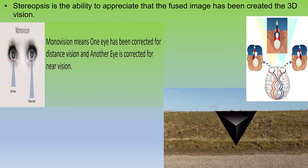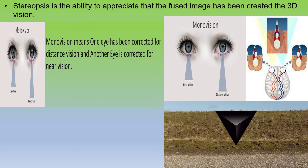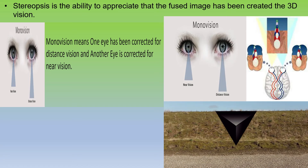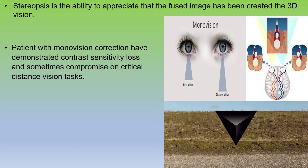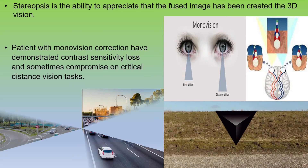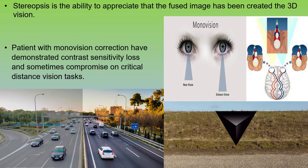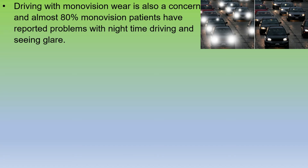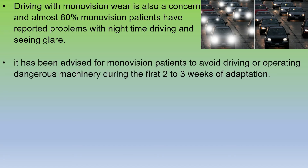But in monovision, both eye image sizes are different because both eye powers are different. That's why in monovision, stereopsis is decreased, which results in some monocular suppression of blur, and also occurs as the add power increases. Patients with monovision correction have demonstrated contrast sensitivity loss and sometimes compromise on critical distance vision tasks. Driving with monovision is also a concern — almost 80% of monovision patients have reported problems with night driving and seeing glare. It is advised for monovision patients to avoid driving or operating dangerous machinery during the first 2–3 weeks of adaptation.